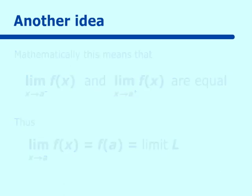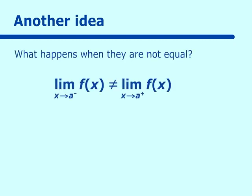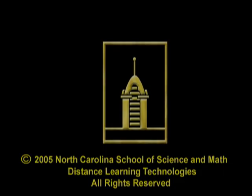What happens when they are not equal? That is, when the limit as x approaches a from the left hand side does not equal the limit as x approaches a from the right hand side. It means the limit does not exist. This concludes our short lesson on the introduction to limits.